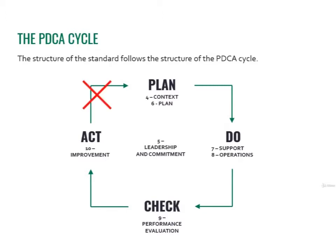Now that we are familiar with the concept of the PDCA cycle, we can go beyond that simple concept. Actually, the PDCA cycle is wrong. We said that the cycle is made of these steps: plan, then do, then check, then act.